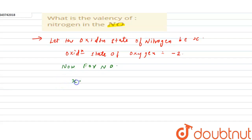x plus minus two equals to zero. That equals to x is equal to plus two. Okay, so the valency